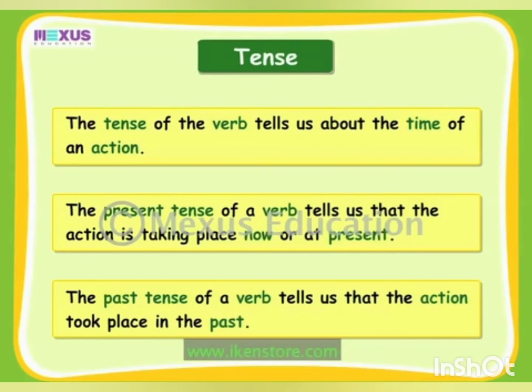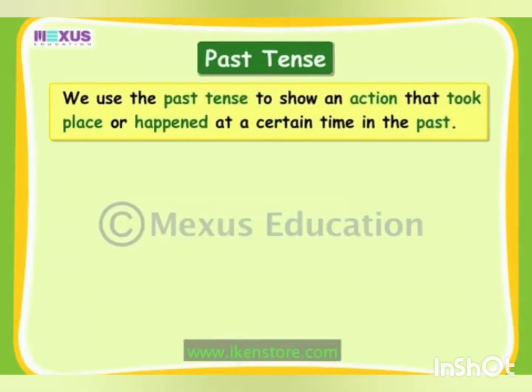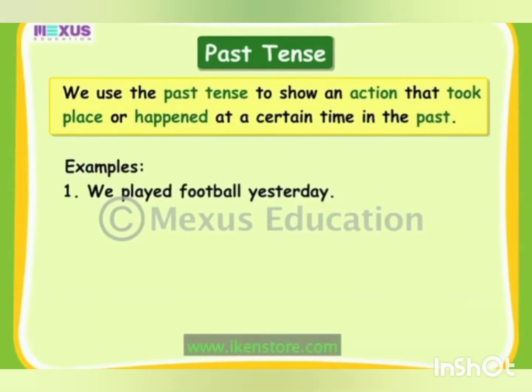The tense of the verb tells us about the time of an action. Children, we have learned about present tense — the present tense of a verb tells us that the action is taking place now. Whereas the past tense of a verb tells us that the action took place in the past. We use the past tense to show an action that took place or happened at a certain time in the past. For example, 'we played football yesterday' — the verb 'played' tells us that the action took place in the past.